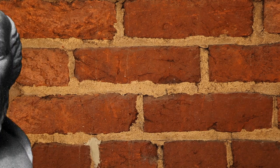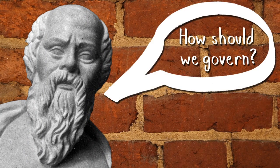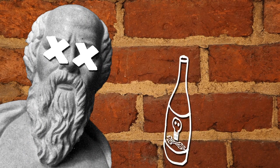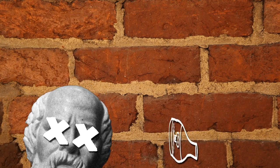Now, Socrates, the old Greek philosopher, had an innocent enough question: how should we govern? He was executed. Political thought, it turns out, is kind of complicated.